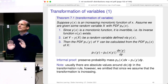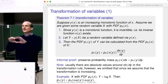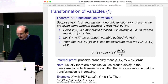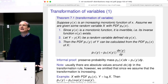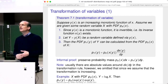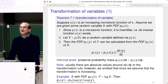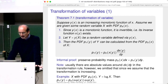Usually the absolute values are included. Here's an example: given a random variable x with PDF p_x, and the transformation y of x = log(x). The logarithm is an increasing monotonic function, so the theorem applies. I need the derivative of the inverse. The inverse of the logarithm is the exponential function, and its derivative is itself. So I plug e^y into the x density and multiply by e^y.